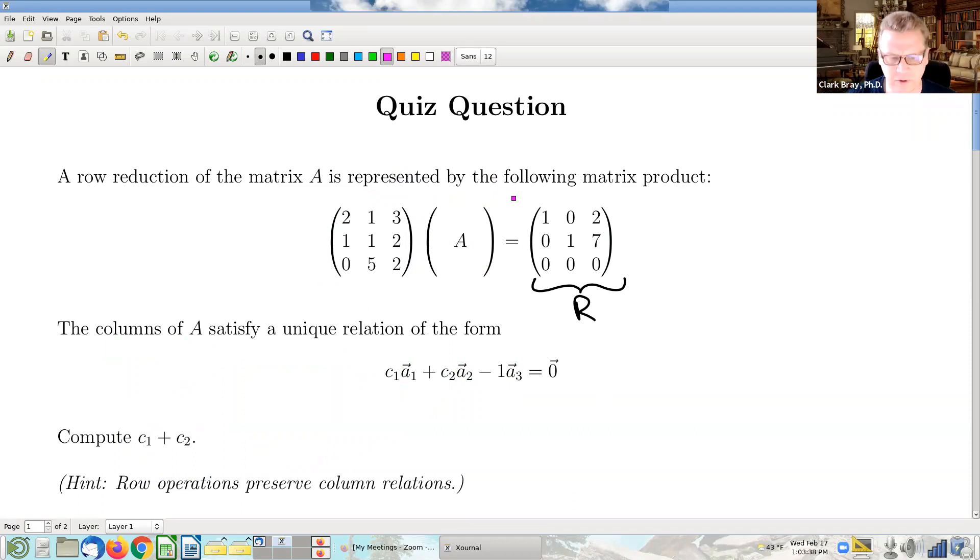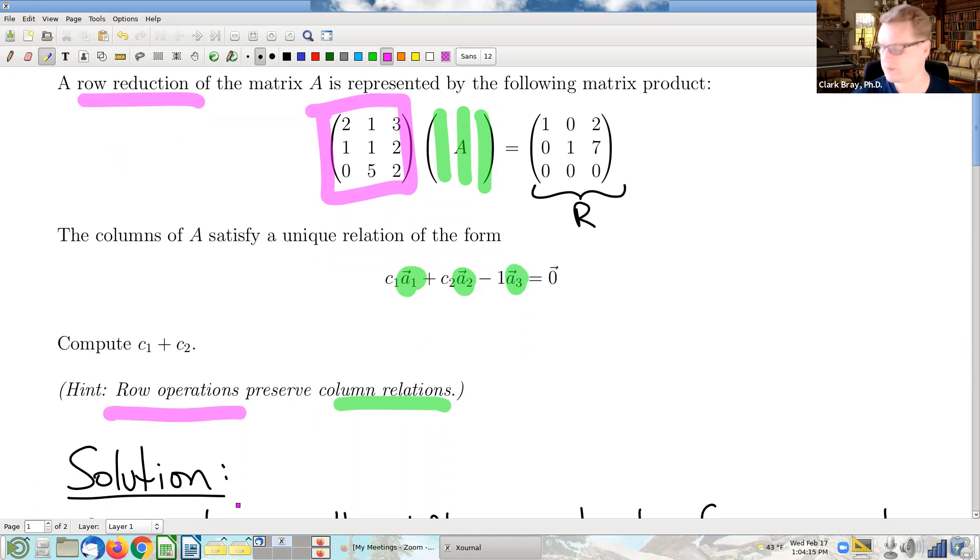Okay, so the clever way to do this is to take advantage of the hint here. And that is that row operations preserve column relations. Okay, so we have been asked to find this relation, a relation between the columns of A. We want to understand these relations. But we know that this matrix here, because it represents the row reduction, it consists of a bunch of row operations, right?